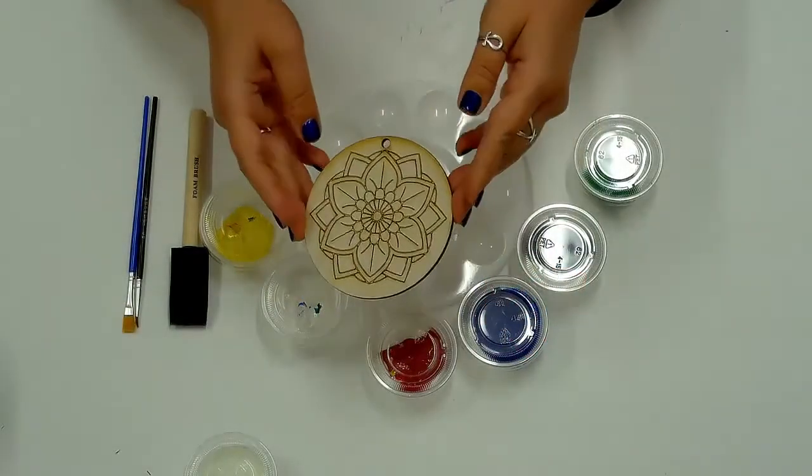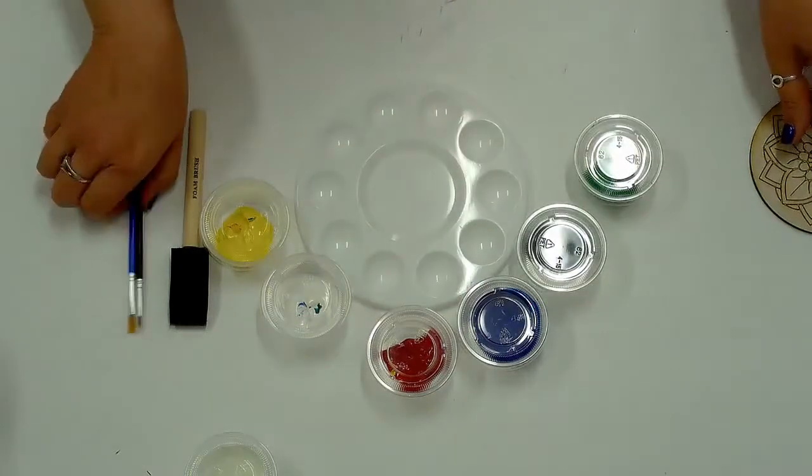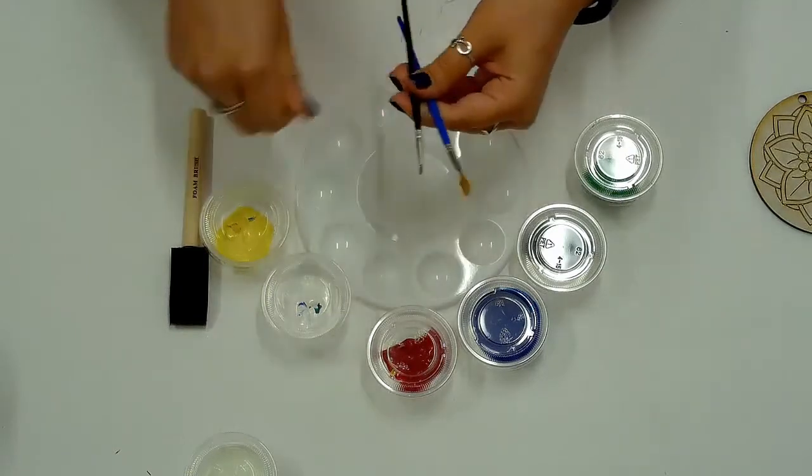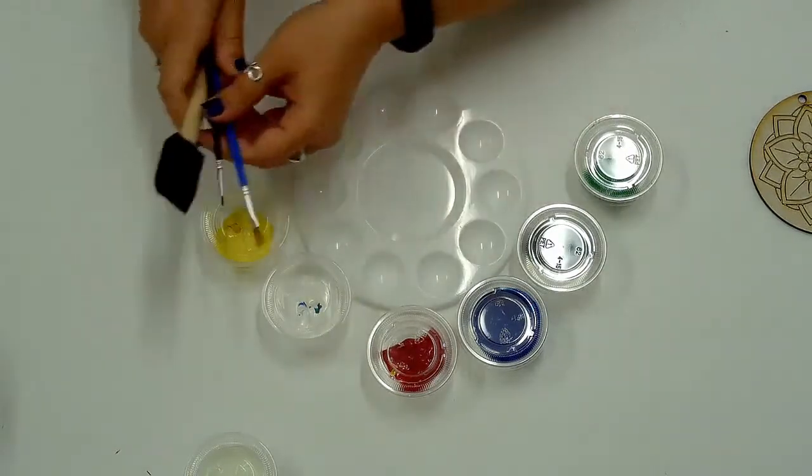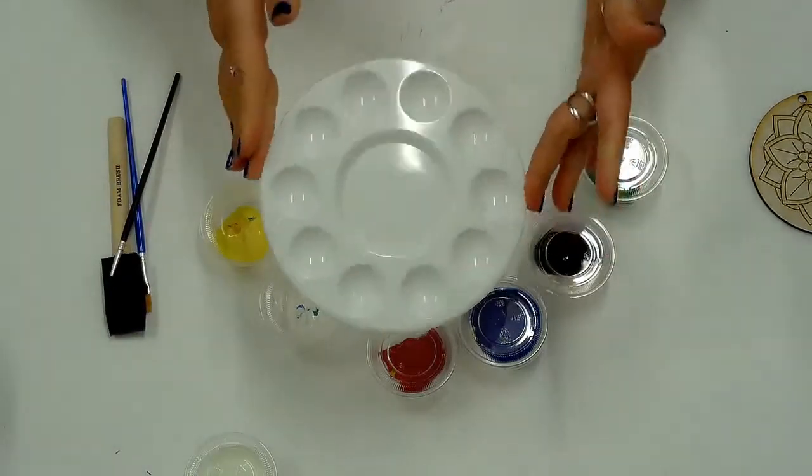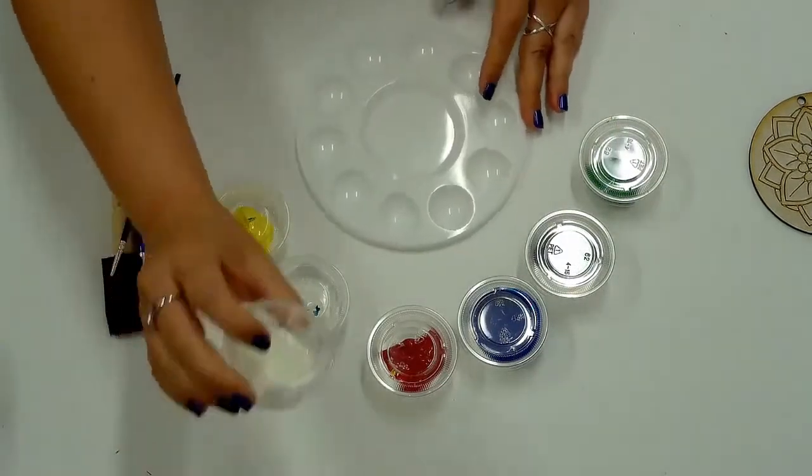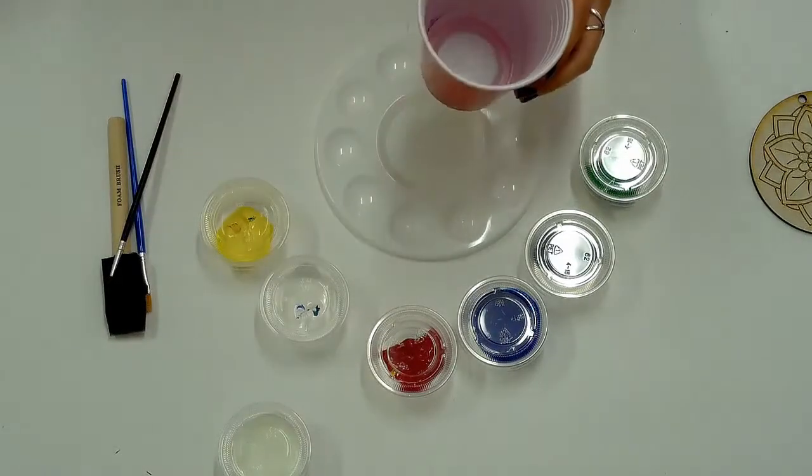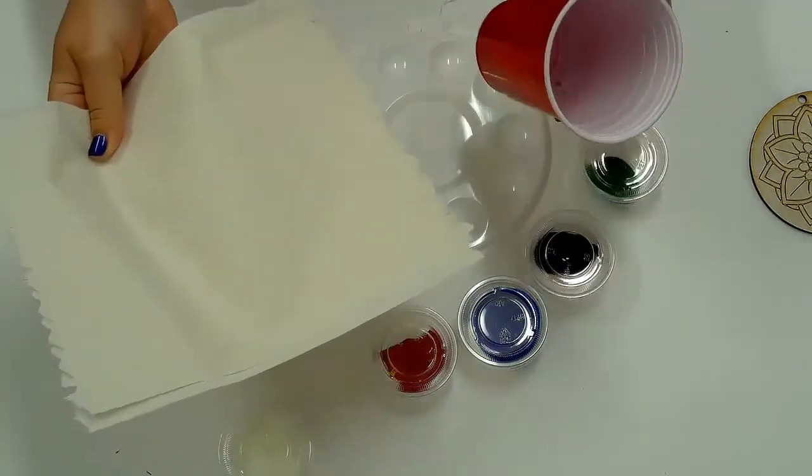Supplies include mandala, two paint brushes size 00 and size 9, foam brush, painter's palette, acrylic paint, and dishwasher safe Mod Podge. You will also need a plastic cup for water and paper towels. Let's get started.